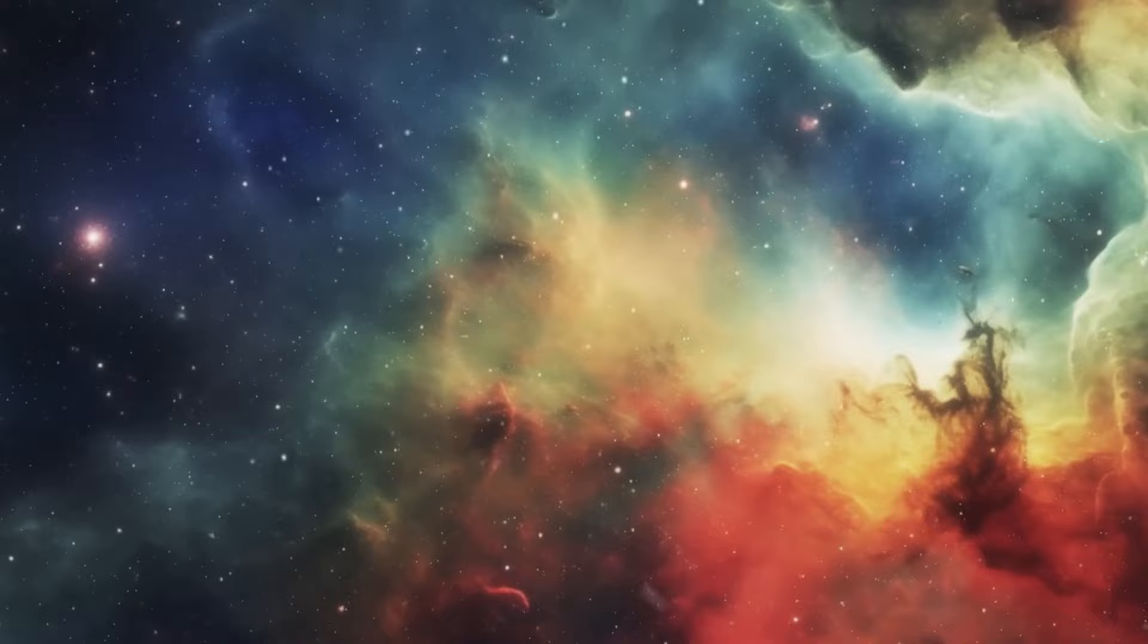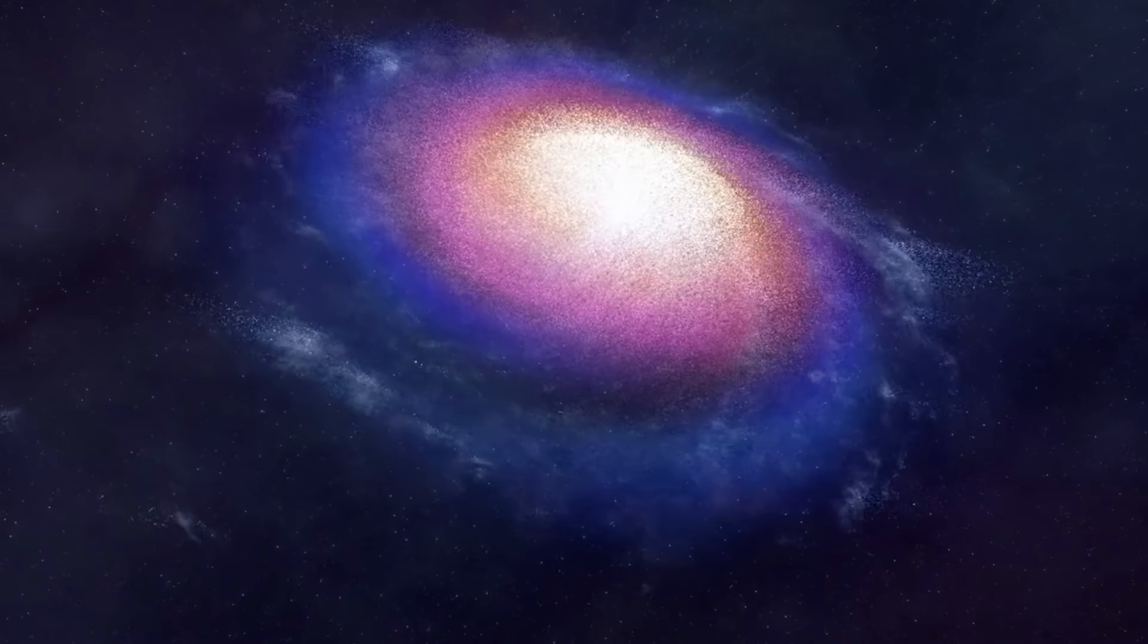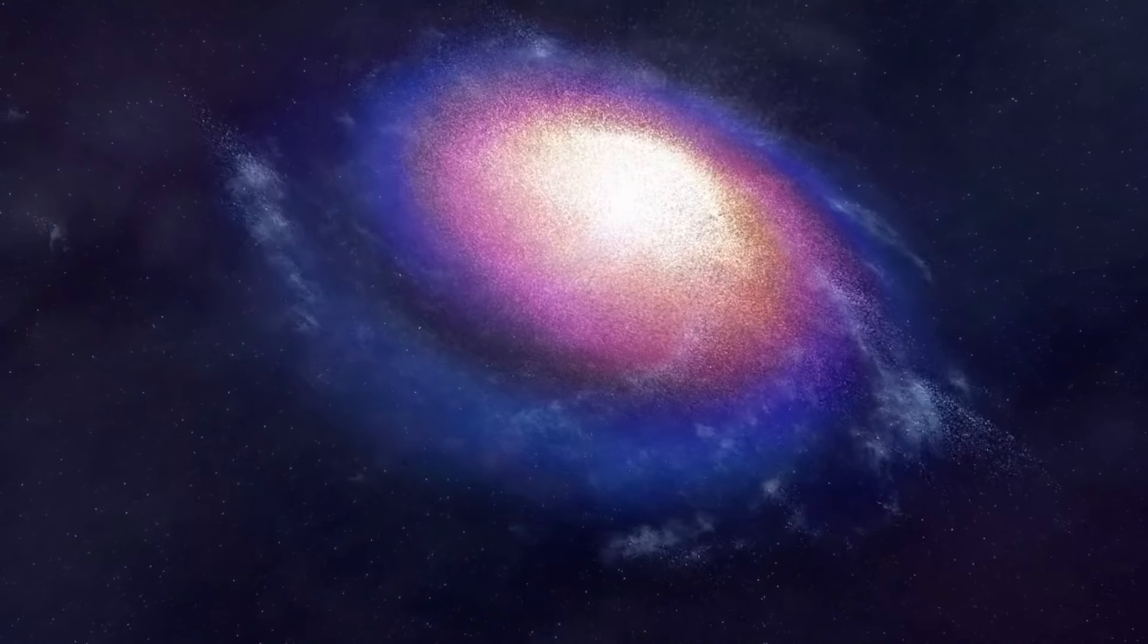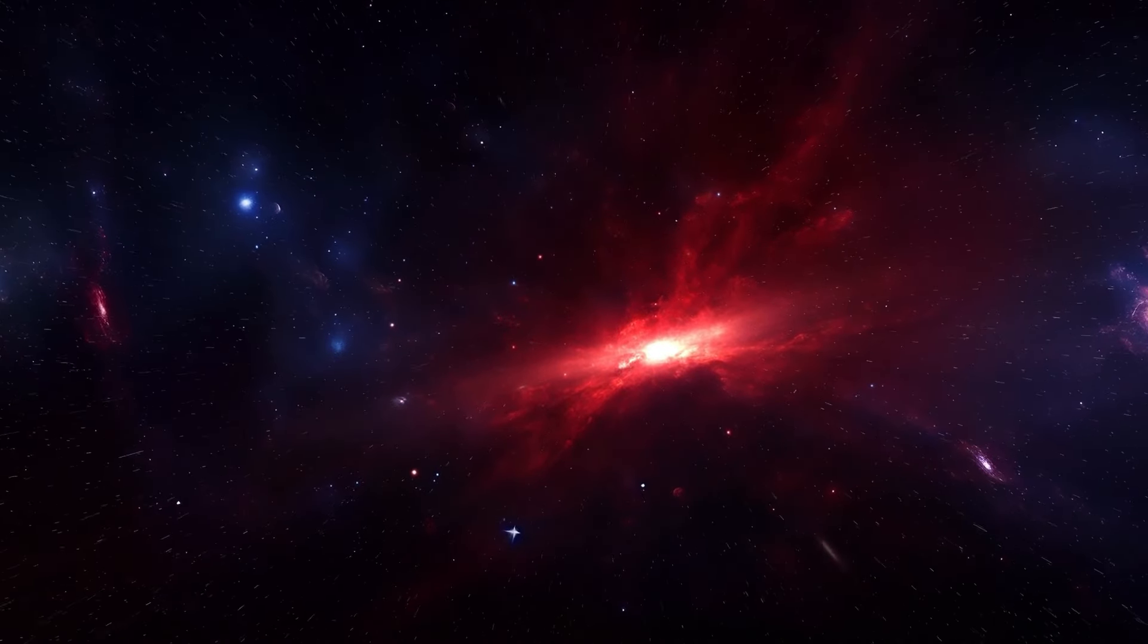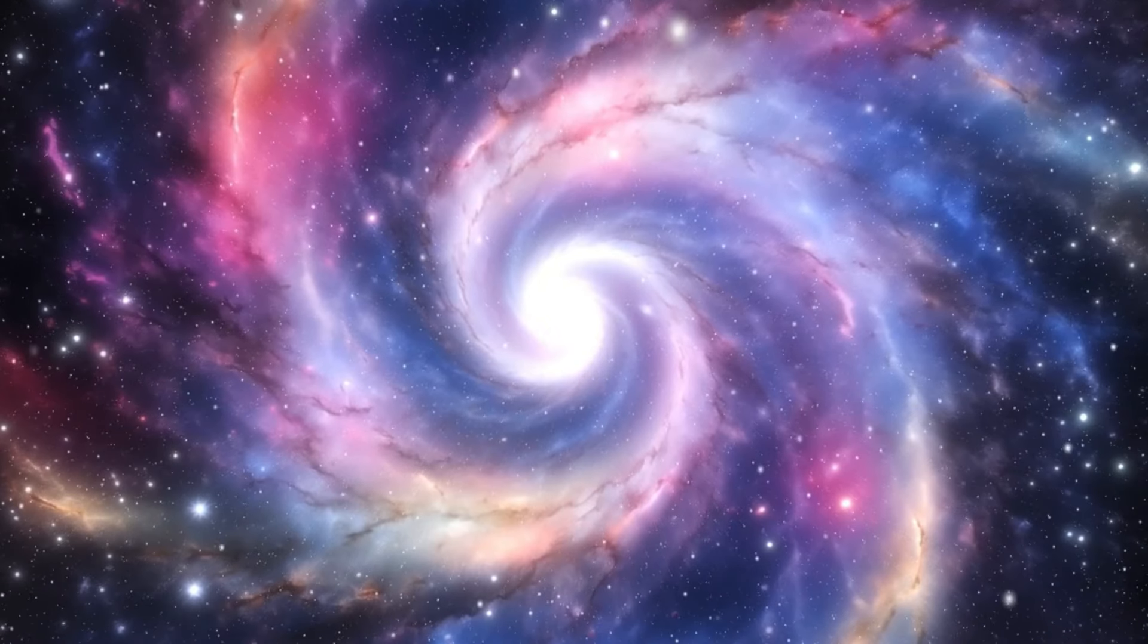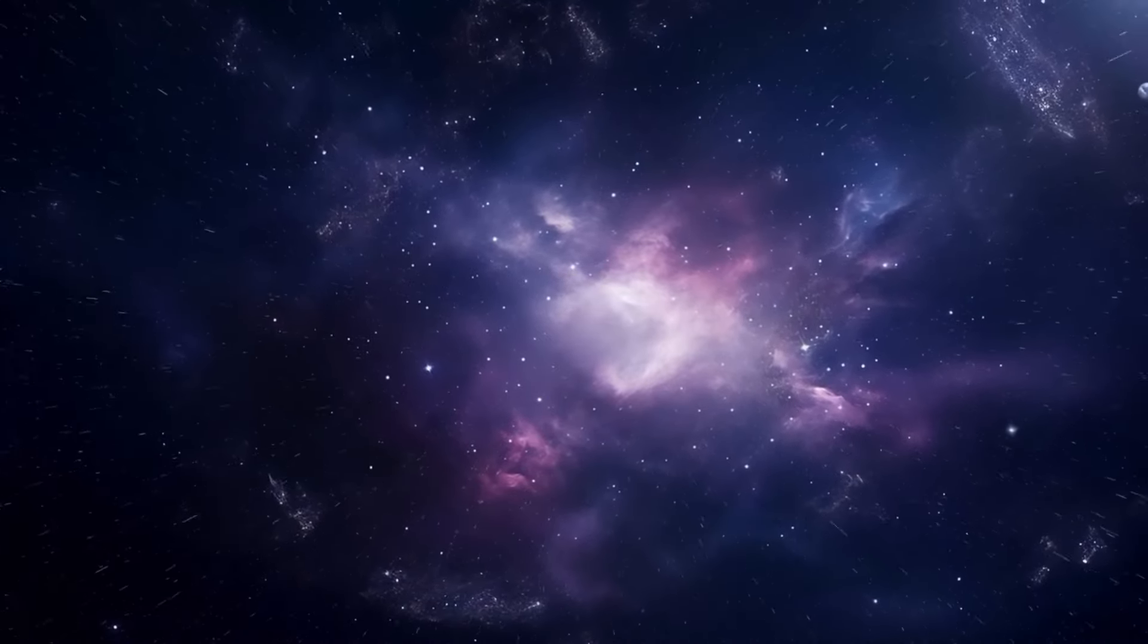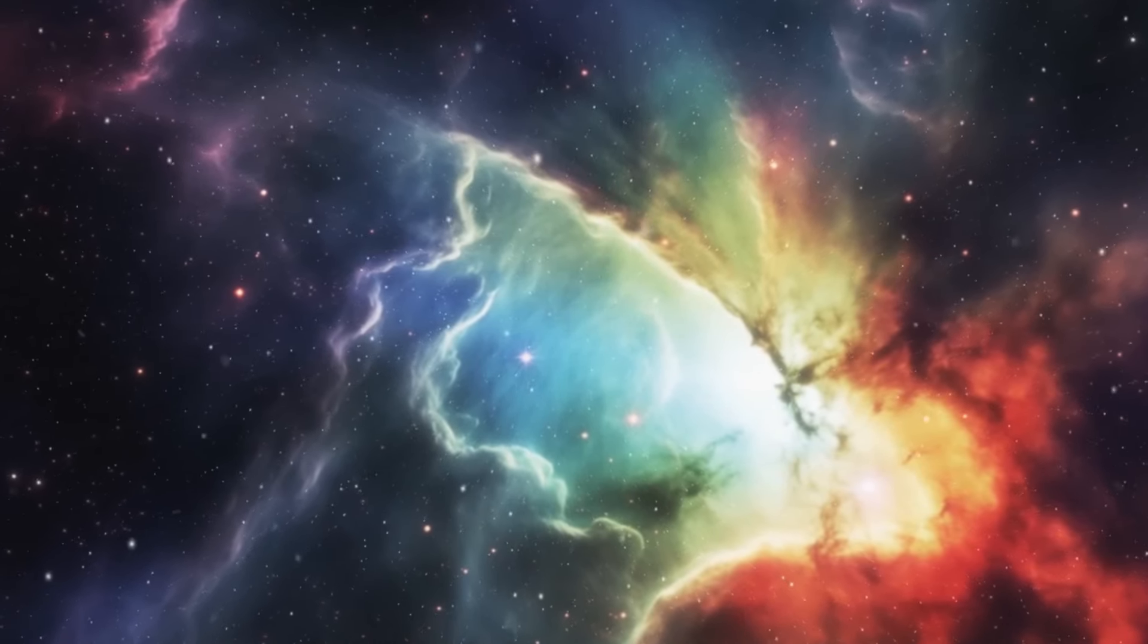As scientists grapple with the complexities of Betelgeuse's potential supernova, they also contemplate the broader implications for our understanding of stellar evolution. The red supergiant, with its unique characteristics and behavior, serves as a celestial laboratory offering insights into the last stages of a dying star. The data gleaned from monitoring Betelgeuse could revolutionize our models and predictions for similar stellar phenomena. Beyond its potential as a harbinger of cosmic cataclysm, Betelgeuse assumes a pivotal role in advancing our comprehension of stellar evolution. As the cosmic narrative unfolds, Betelgeuse's potential supernova emerges as a pivotal chapter, presenting an opportunity for the scientific community to stand at the forefront of cosmic exploration.